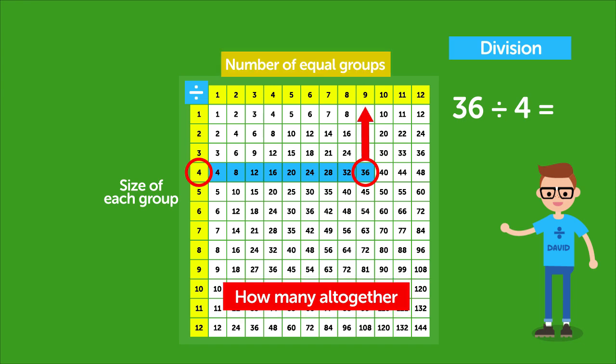Finally, we read up to the yellow row to find out how many of these equal groups we can make. So we have our answer. 36 divided by 4 equals 9.